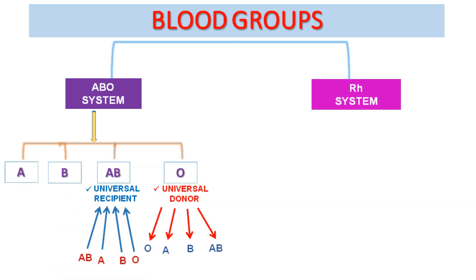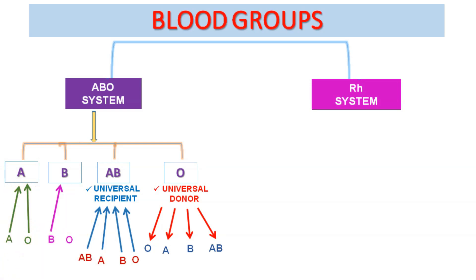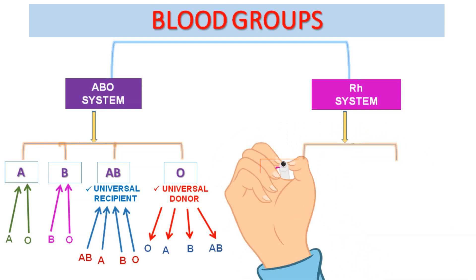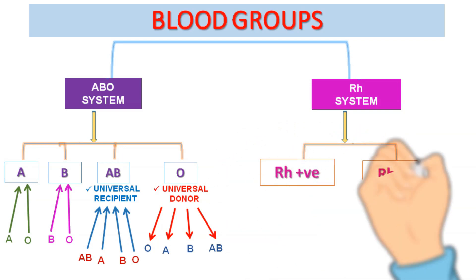A person with blood group A can receive blood from A and O types only. Similarly, a person with blood group B can receive blood from B and O types only. The second blood grouping system is called the RH system. The blood of most people contains a substance called RH factor, where RH stands for Rhesus, a common monkey in which the factor was first discovered.